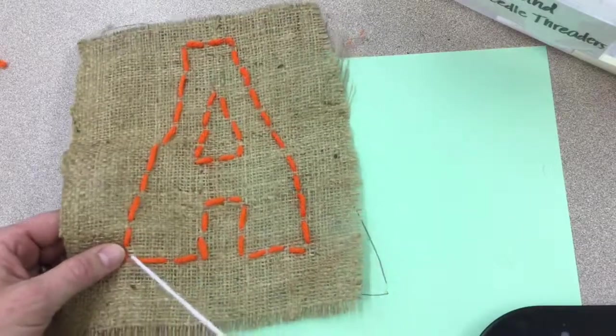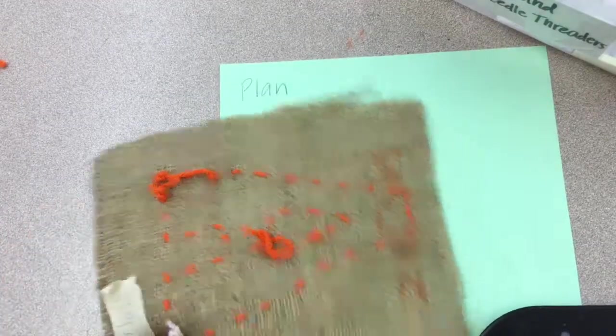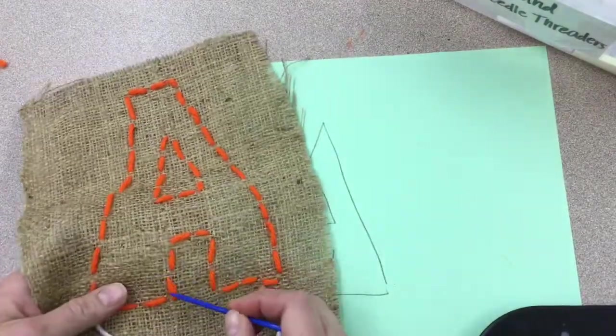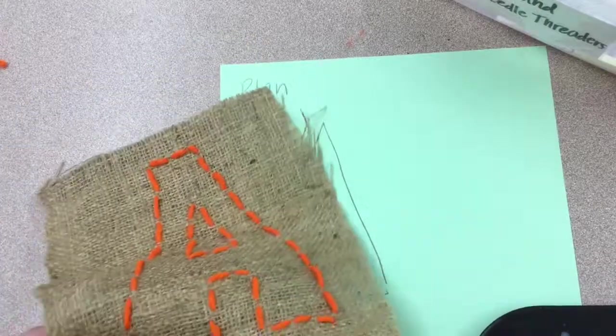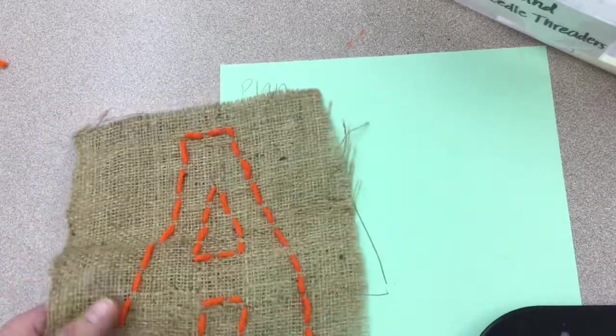Pull that all the way through to the knot. I'm keeping all my knots on the back side. And then I'm going to do this stitch all the way over to the other end of the A. Pull that tight, and that makes a white line.